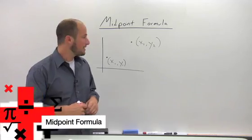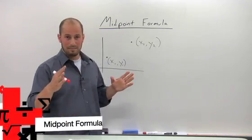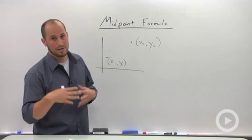The midpoint formula is an easy-to-use way to find the middle of two different points on a coordinate axis.